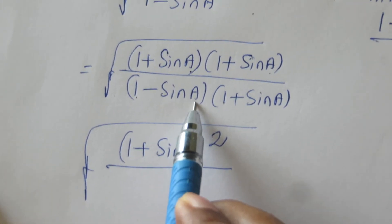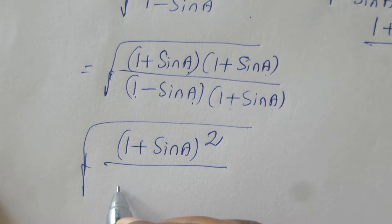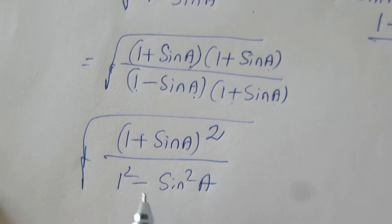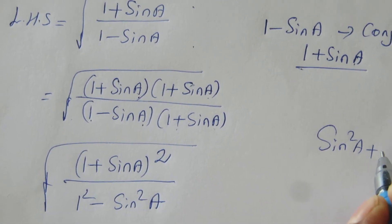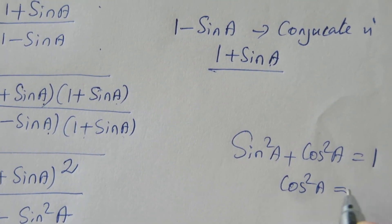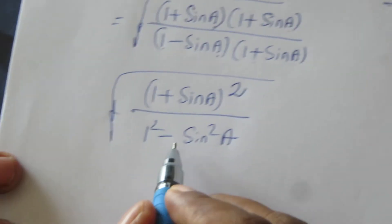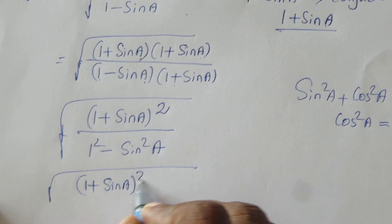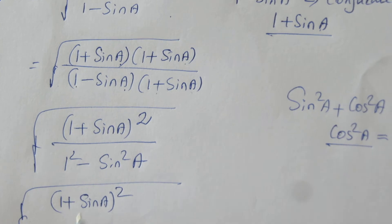The denominator 1 minus sin A into 1 plus sin A is in the a squared minus b squared form, so we apply 1 squared minus sin squared A. Now 1 minus sin squared A is from the identity sin squared A plus cos squared A equals 1, which gives us cos squared A equals 1 minus sin squared A. We apply this value in the denominator.